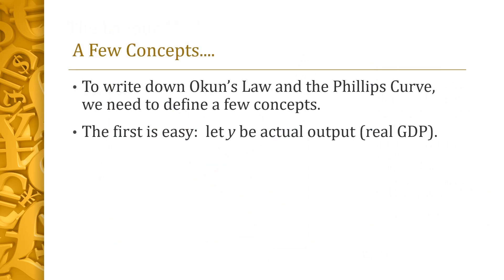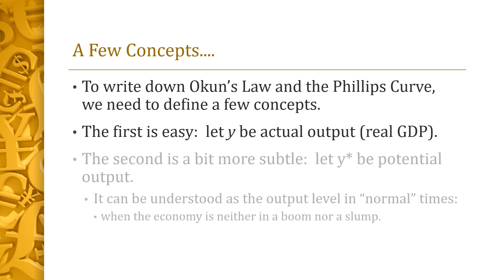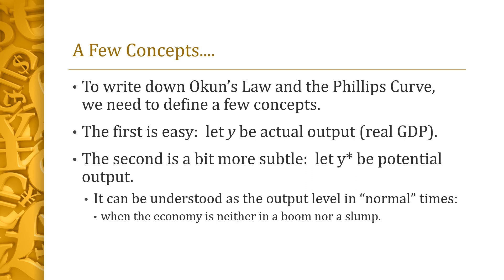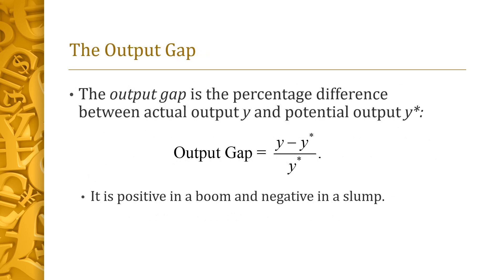We next turn to algebraic statements of the Phillips curve and Okun's Law. We first need to define a few concepts. Let Y denote actual output — real GDP in the economy. Let Y* denote what is called potential output: the amount the economy produces in normal times, when it is neither overheated nor in a recession. The output gap is the result of subtracting potential output from actual output and dividing by potential output — the percentage by which actual output exceeds potential output. In a boom the output gap is positive, while in a recession it is negative.